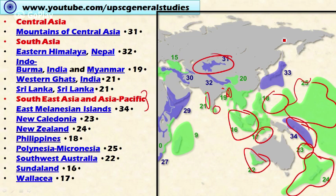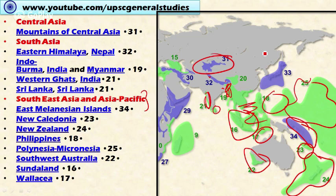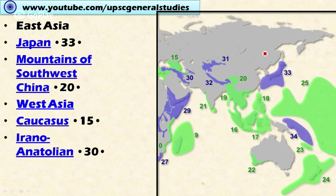In India, we have four biodiversity hotspots: the Western Himalayas, the Eastern Himalayas, the Western Ghats, and Northeastern India — including the Nicobar Islands, which are part of Sundaland. As mentioned, Sundaland comprises the Indomalayan Peninsula, Singapore, Taiwan, and Brunei. These are all the biodiversity hotspots of Central Asia, South Asia, and Southeast Asia and the Asia Pacific.